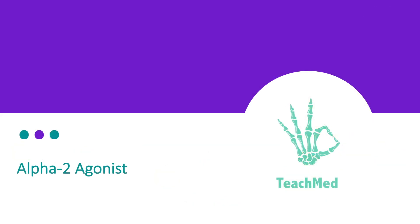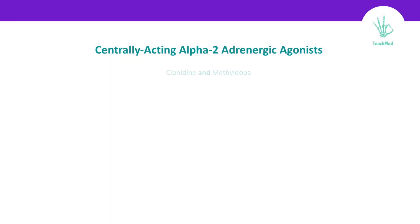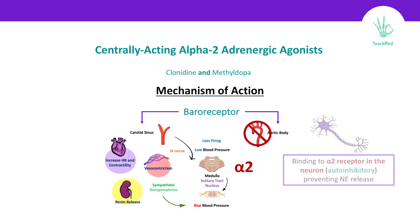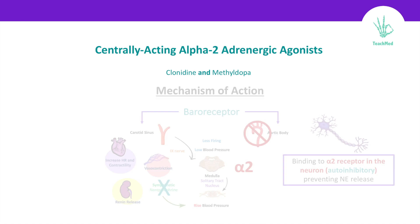Alpha-2 agonists. These are centrally acting alpha-2 adrenergic agonists, like clonidine and methyldopa. They work on the upper center alpha-2 receptors, exactly in the presynaptic neurons. They bind to the auto-inhibitory site and prevent the release of norepinephrine and other neurotransmitters. When you don't have neurotransmitters like norepinephrine, you don't have sympathetic activity, and this will help in lowering your blood pressure.